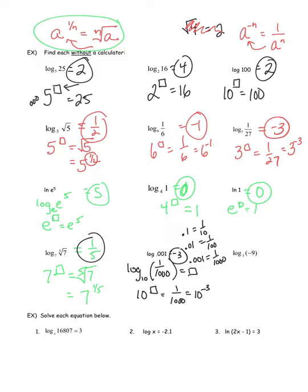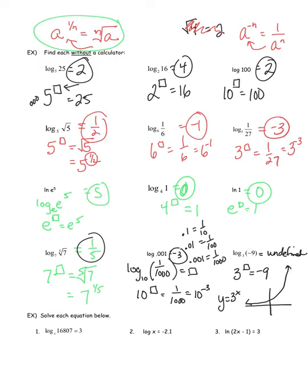For the last one: log base 3 of negative 9. I'm thinking: 3 to what power is negative 9? If you were to graph y equals 3 to the x, that's exponential growth, and it never becomes negative — there's a horizontal asymptote and it is never going to be negative. So log base 3 of negative 9 does not exist — it is undefined. You can never take the logarithm of a negative number. That one was tricky, but there it is.